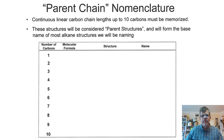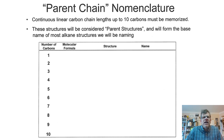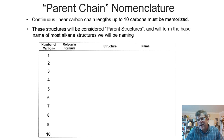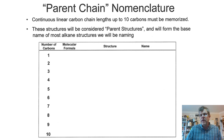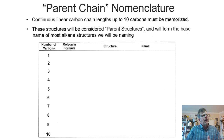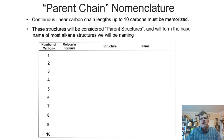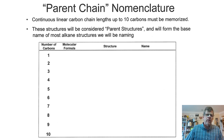Our parent chain nomenclature refers to continuous linear carbon chains up to 10 carbons — these must be memorized. All of these structures will be considered parent structures and form the base name of most alkane structures we'll be naming. We'll also use them when naming aldehydes, alkenes, and other functional groups, so we're on a steep learning curve here. The table has the number of carbons on the left, going from one to ten.